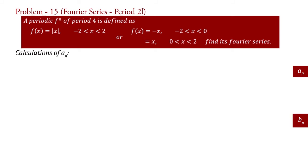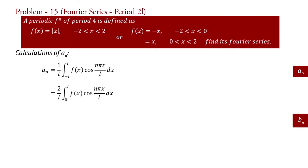Now for a_n: the formula is a_n = (1/L) ∫_{−L}^{L} f(x) cos(nπx/L) dx. Since f(x) is even, a_n = (2/L) ∫_0^L f(x) cos(nπx/L) dx. Substituting f(x) = x and L = 2, a_n = (2/2) ∫_0^2 x cos(nπx/2) dx, and the 2s cancel, giving a_n = ∫_0^2 x cos(nπx/2) dx.